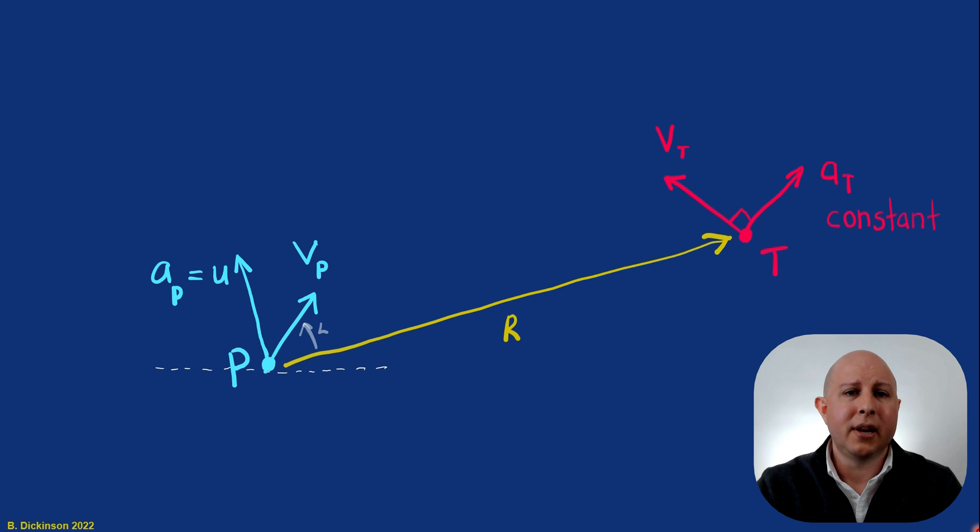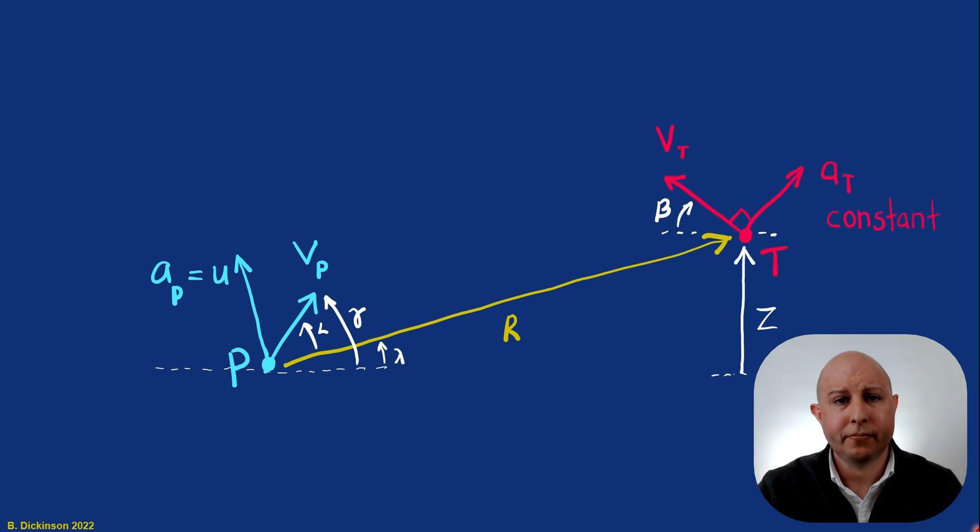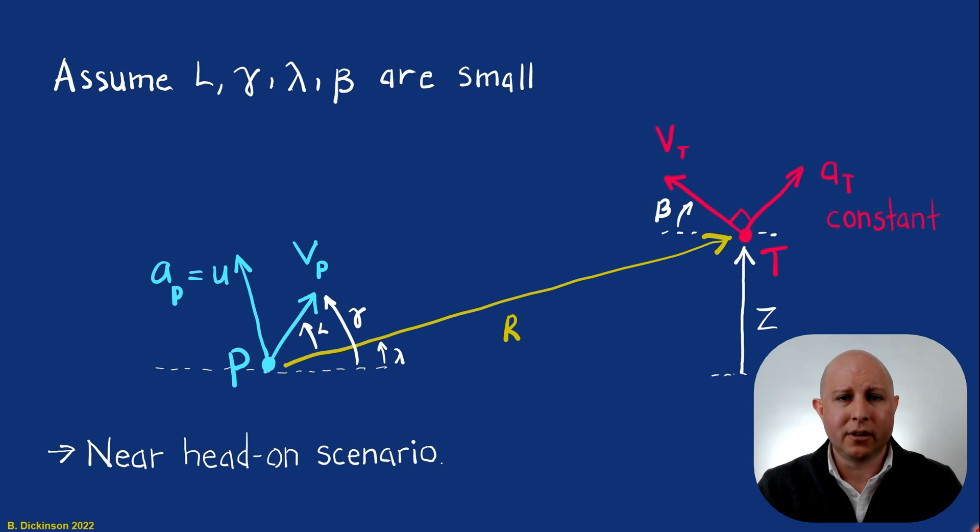And then to define the engagement now, some angles: lead angle, flight path angle, line of sight angle (that's an important one), target heading angle, relative position of the target with respect to the pursuer. And as before, in section one, we assume that all these angles were small. We're working with a linearized engagement. So we're roughly in a head-on scenario.